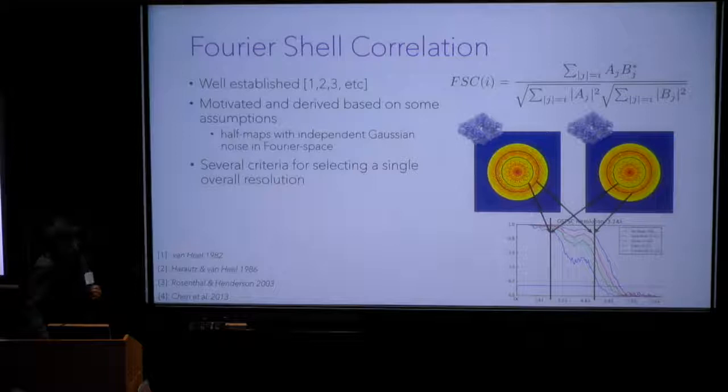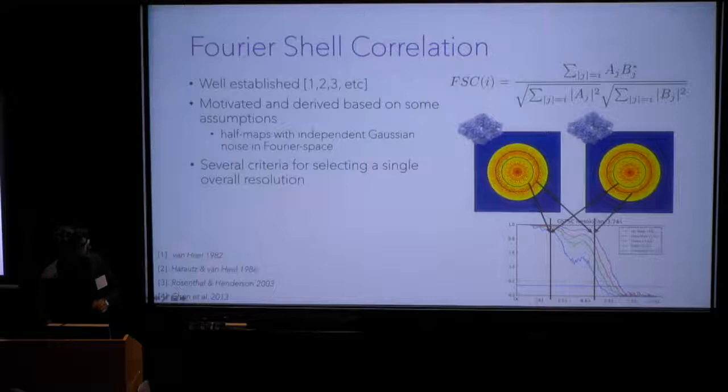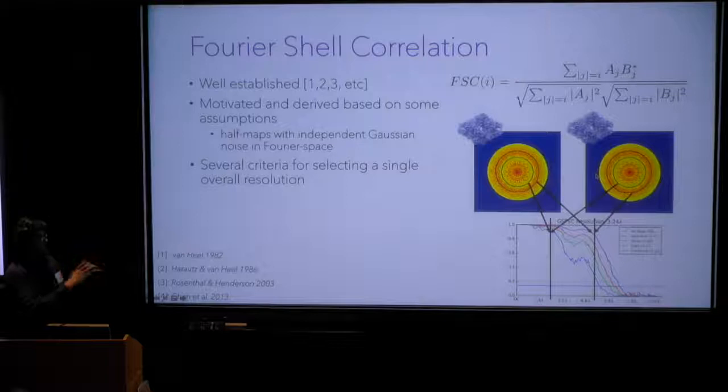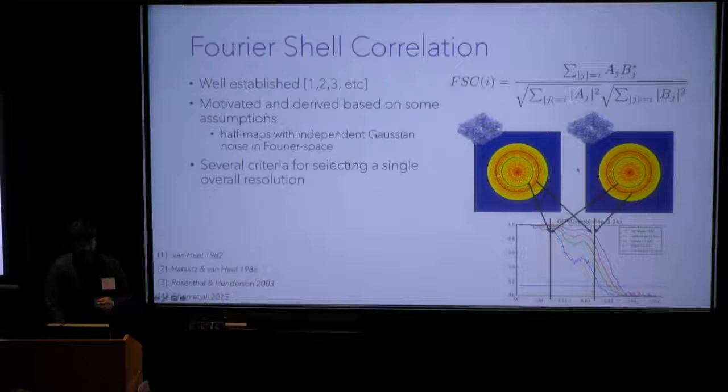The FSC in particular has been given a lot of thought in the community and can generally be derived based on some assumptions about the 3D density maps input to it. If you have two independent half maps, the assumptions are that these two half maps in real space are independent, they have Gaussian noise in Fourier space with some color potentially, but those Fourier components are all IID or at least independent. That means individual Fourier shells of the two half maps can be correlated with each other, and the independence of Fourier shells means we can directly compute the FSC curve.